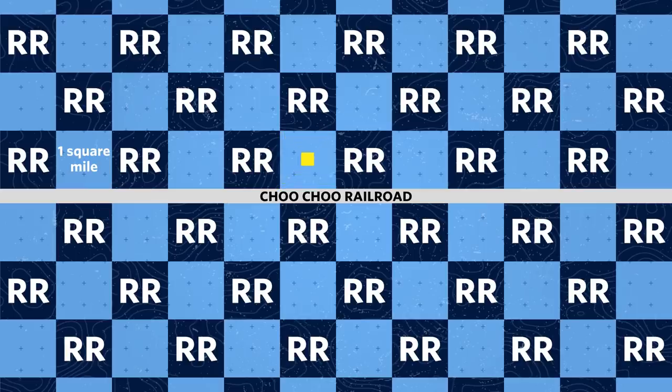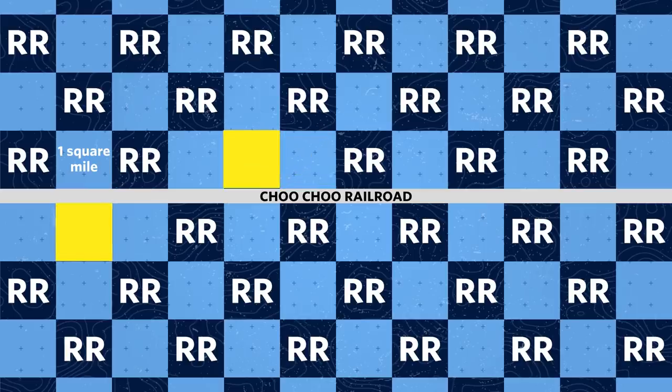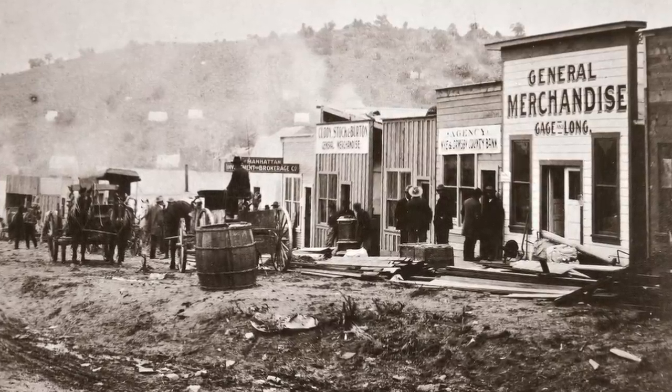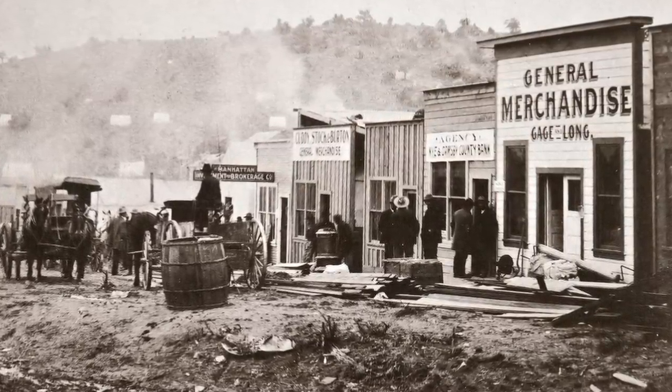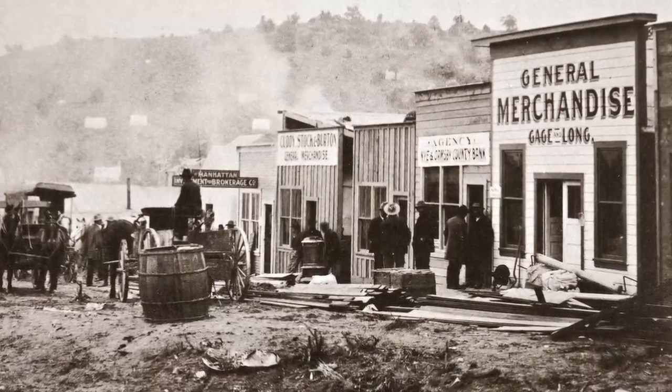The new towns existed only on paper until settlers arrived and found tanneries, saloons, barbershops, laundries, and all the other essential businesses needed to run a town. The railroads hoped to jumpstart the local economy by attracting as many settlers and proprietors as possible. Railroads purposely kept business lots small to encourage many individual business owners to arrive instead of one large general store owner.